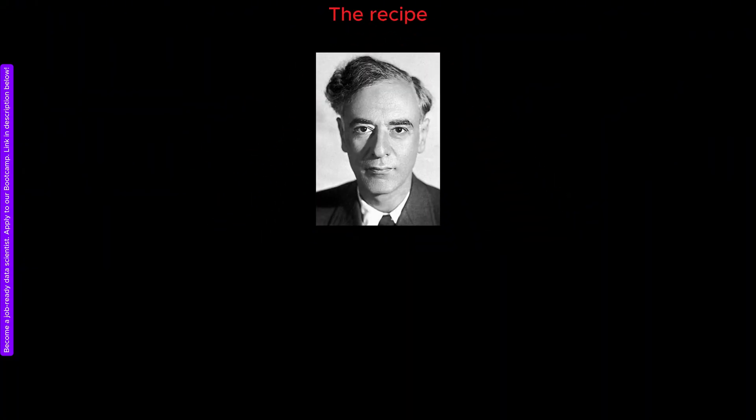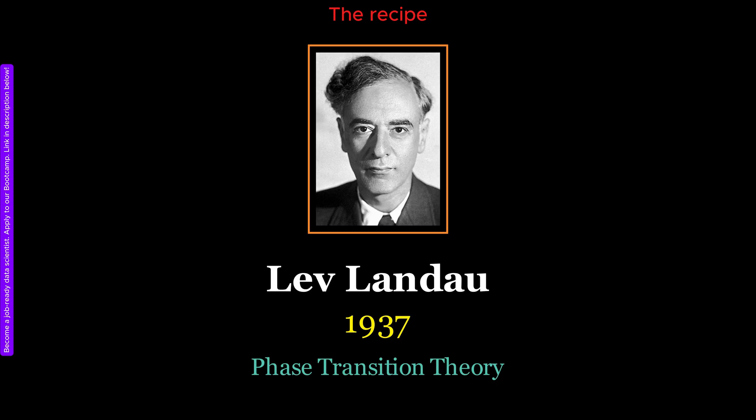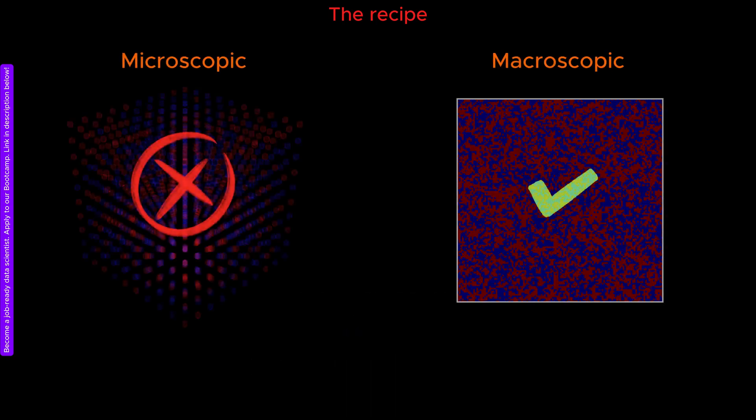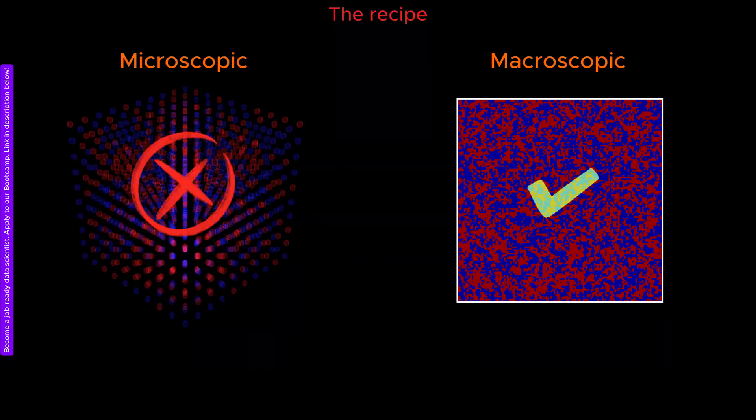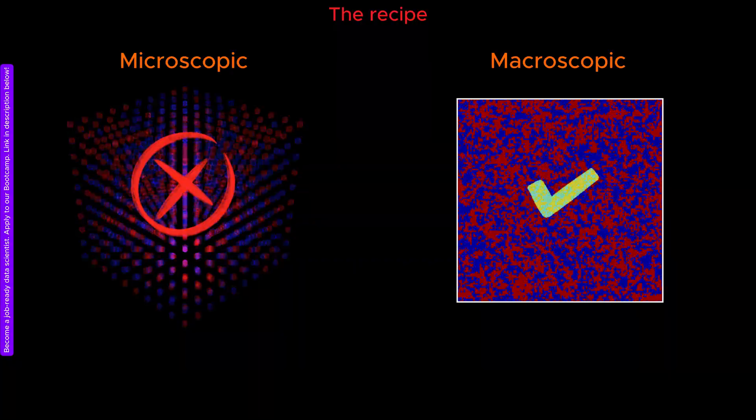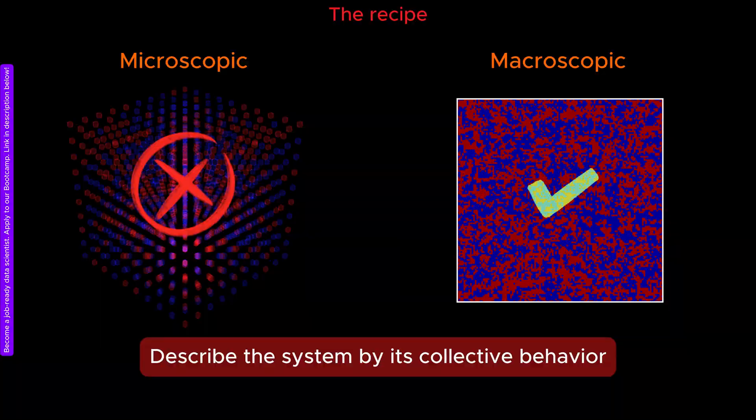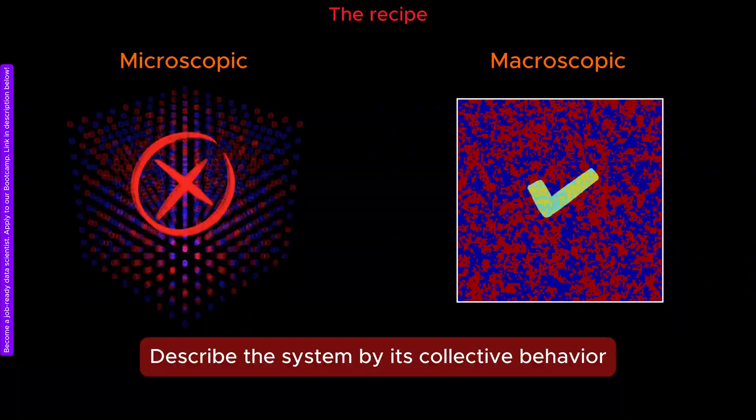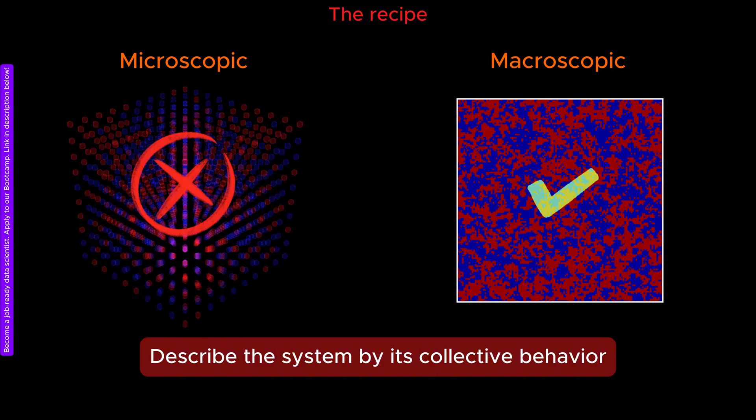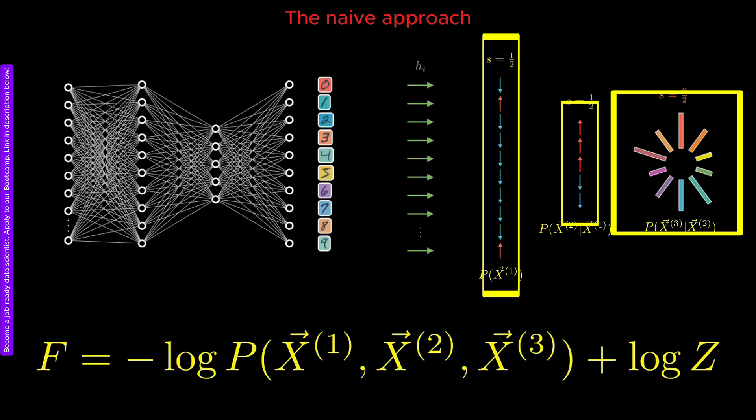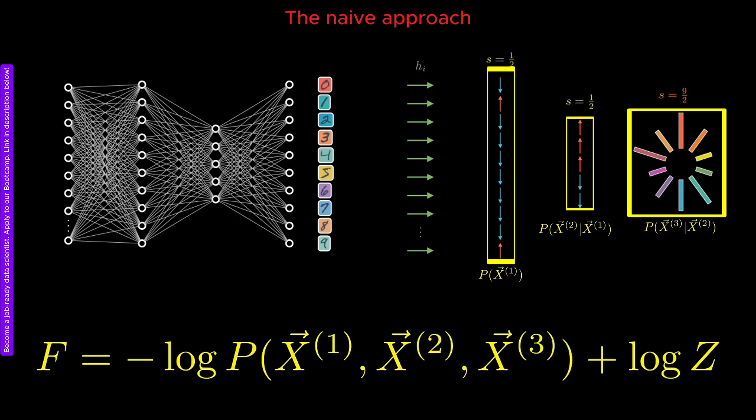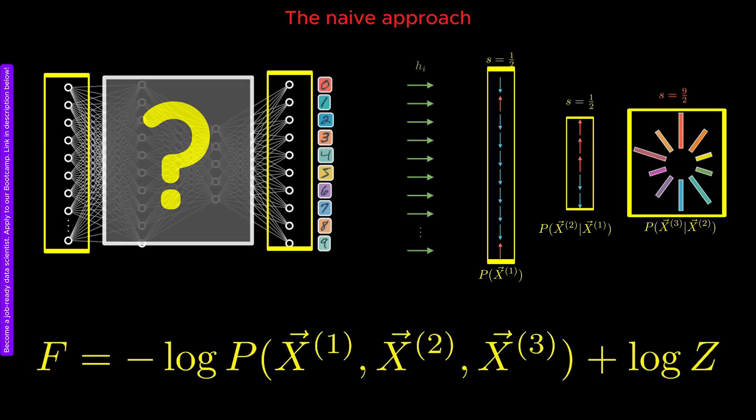The approach I am going to discuss in the rest of this video is inspired by how Landau tackled the problem of phase transitions in physics. Landau realized that one does not need to track every microscopic degree of freedom to understand macroscopic behavior. Instead of a bottom-up approach, he proposed a top-down approach based on the behavior of the system. We adopt the same philosophy here. Instead of trying to merge the probabilities of individual components of an AI model, we infer the probability by observing how the model behaves as a whole.